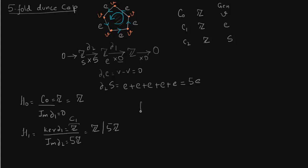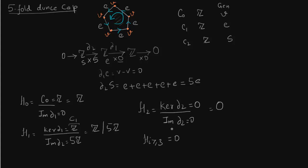Finally, H2 is 0 because it is the kernel of delta2 modulo the image of delta3, and the kernel of delta2 is 0. Similarly, H_i = 0 for all i greater than or equal to 3, since there are no cells of dimension 3 or higher.